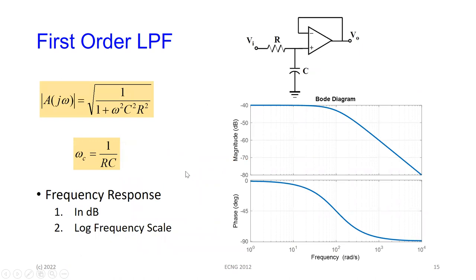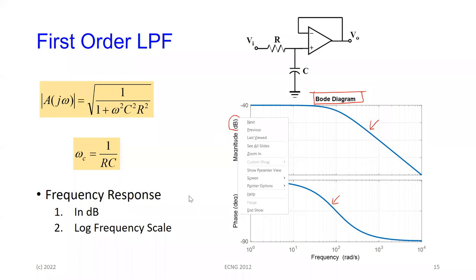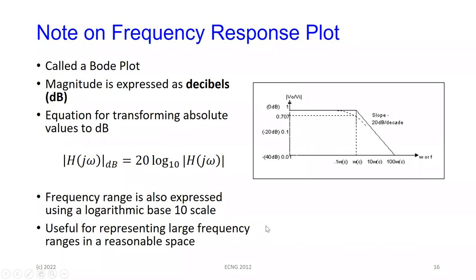The first-order filter also has a phase response associated with it, which we'll cover when we do Bode diagrams in ECNG 2011. Notice that the magnitude of the response is expressed in decibels, and the frequency axis is on a log scale — 1, 10, 100, 1000, 10000 and so on. When we express magnitude in decibels, we take the absolute value and multiply by 20 log base 10.